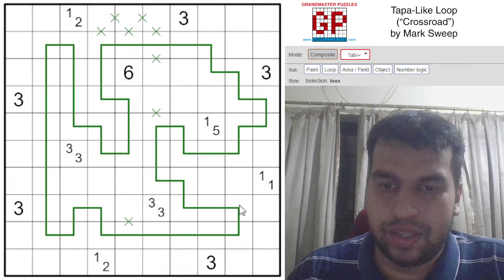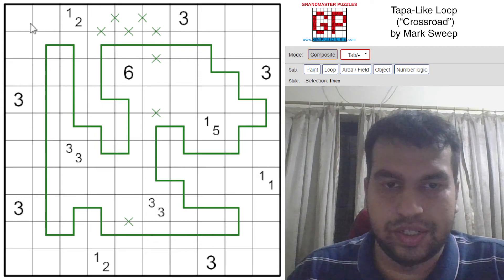So mainly we saw the start with the 1-1, but there were these interesting channels in the corners where you needed to avoid the loop closing. And also this interaction between the 6 and the 3 and the 5 and the 3.